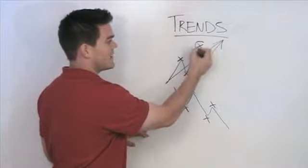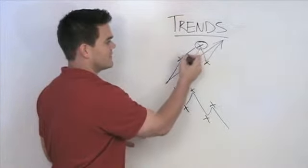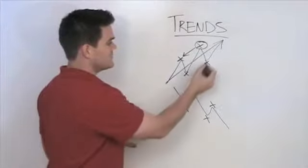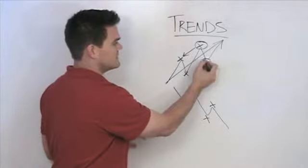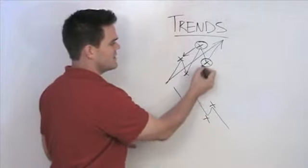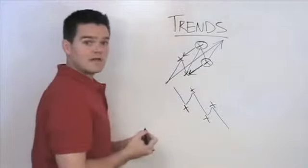So this high right here is higher than that high right there. And we're also seeing higher lows. This low that was established right here is higher than that low.